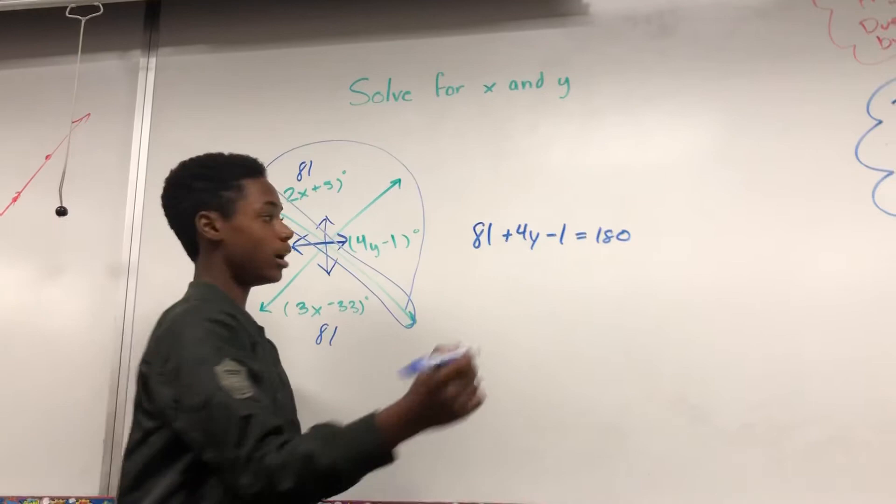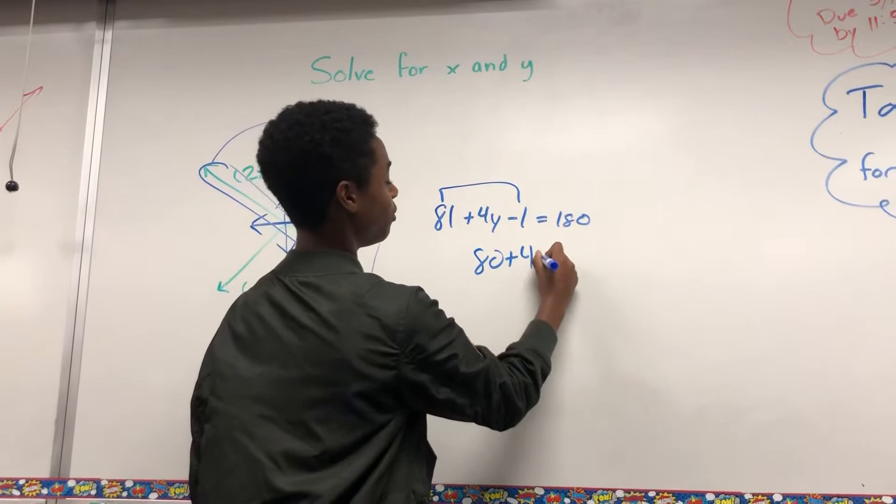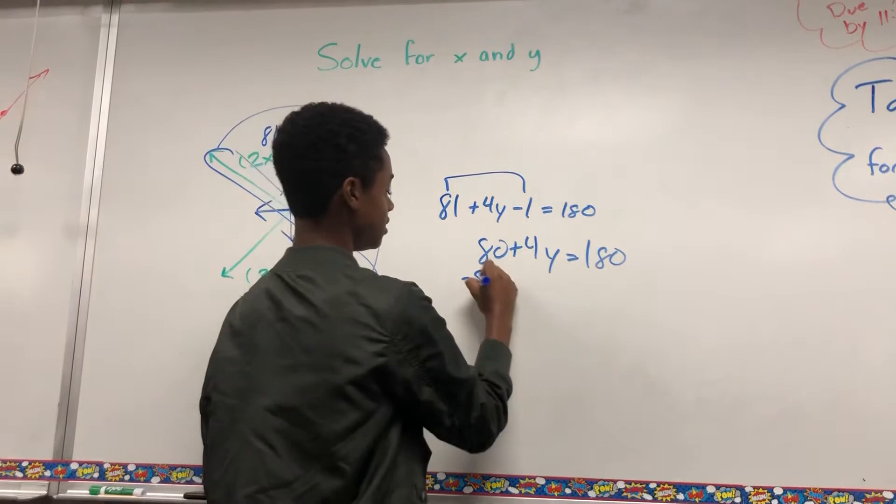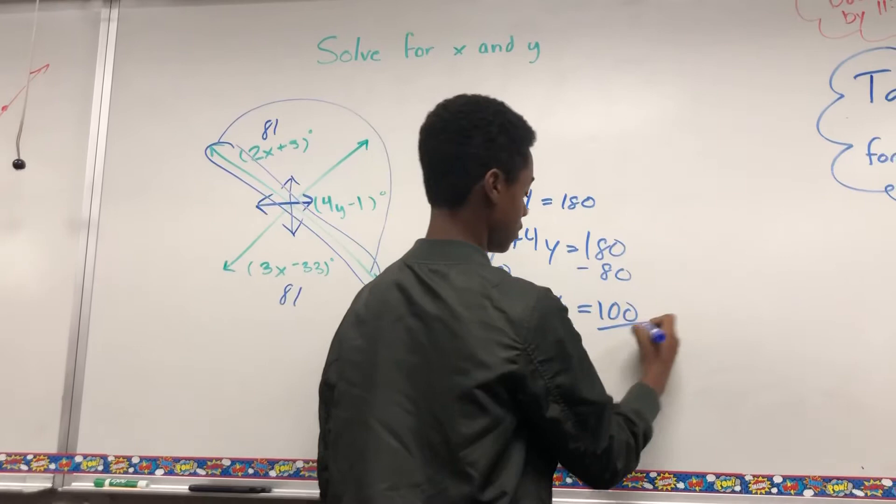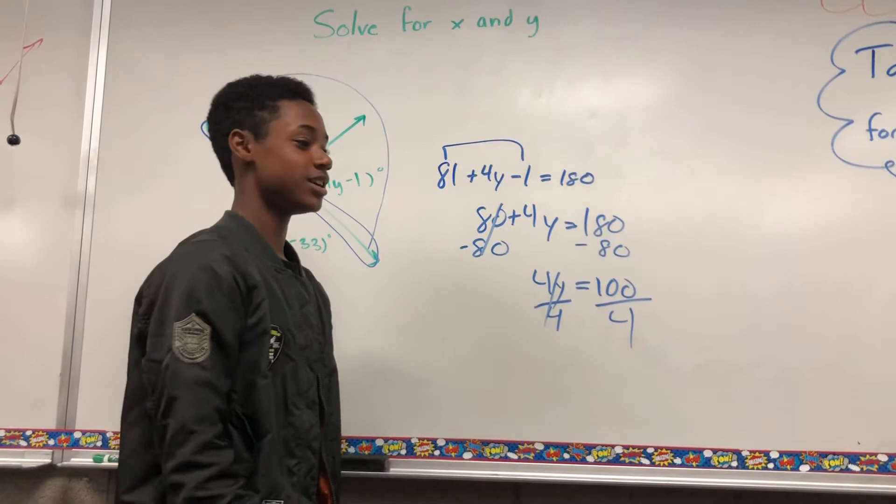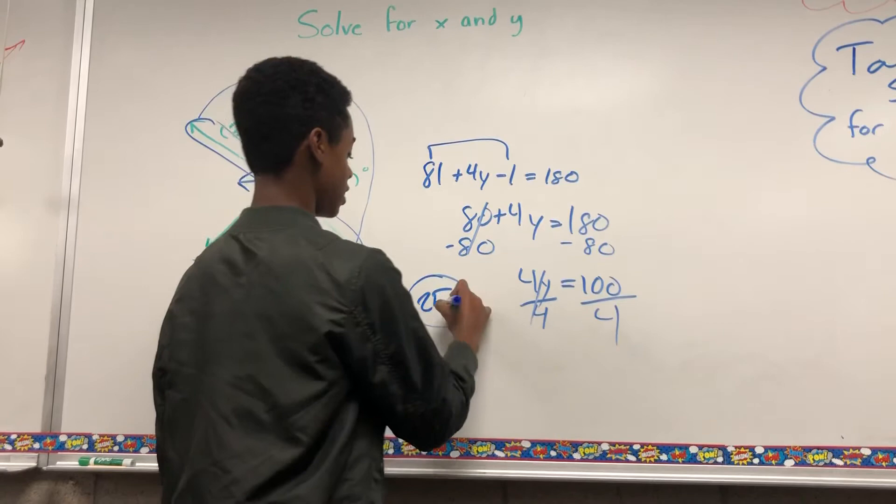So now you want to add like terms. This is going to give you 80 plus 4y equals 180. Then you want to subtract 80 from both sides. That gives you 100 equals 4y. 100 divided by 4 is what, class A? 25. So y equals 25.